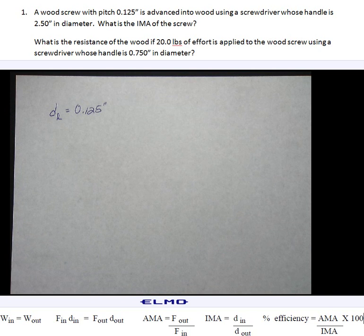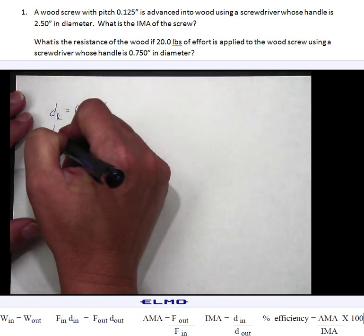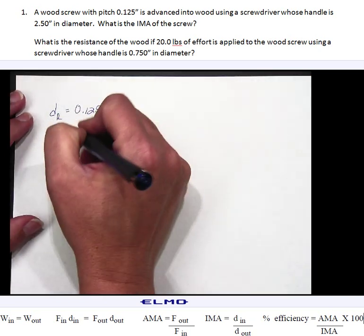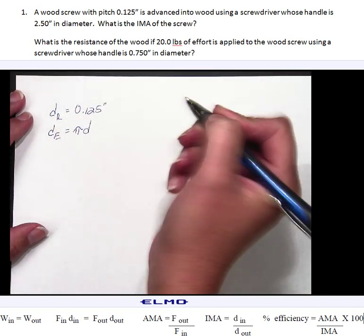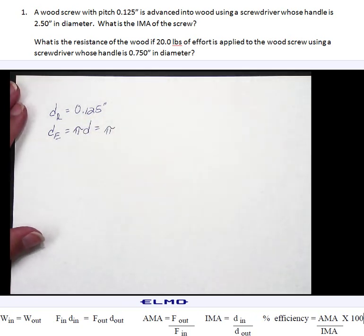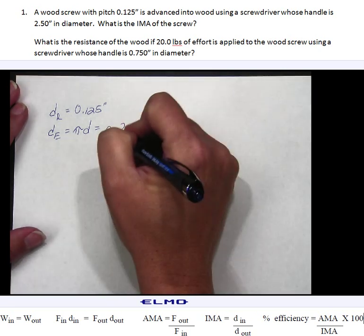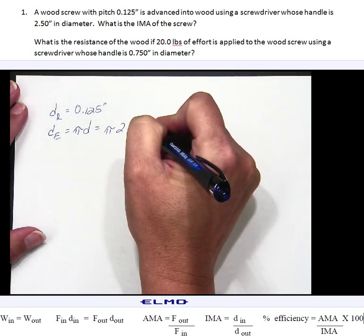It's advanced into wood using a screwdriver whose handle is 2.50 inches in diameter. So remember your distance of your effort is going to be your circumference. So that would be pi D.